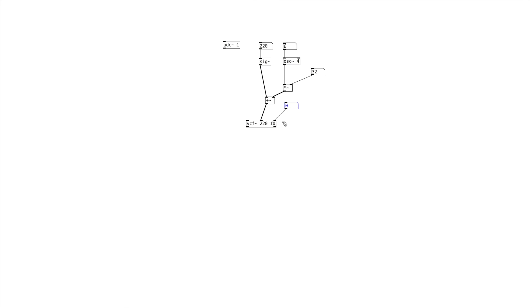Next, we're going to create another number box and attach it to the right inlet. This right inlet is the Q, or basically the resonant peak of the center frequency. When the number is lower — for example, 1 — you have a broader range of frequencies being attenuated, and as you increase it to 10, the band narrows for the frequencies that are allowed to pass through. And of course, we can just add our ADC there.